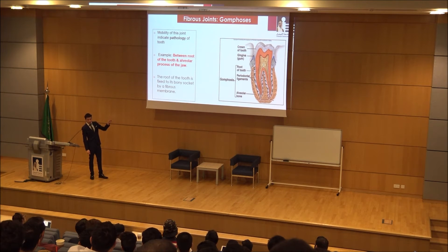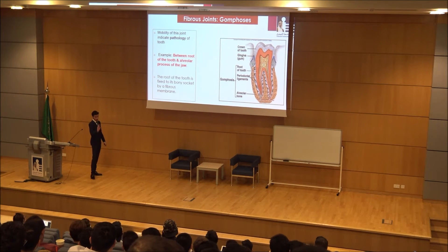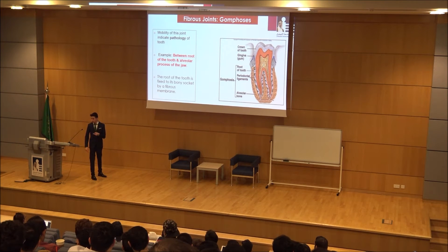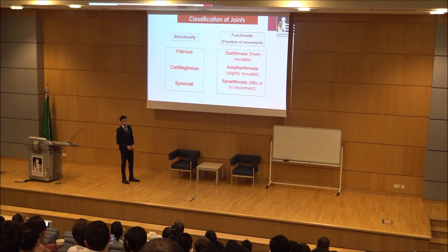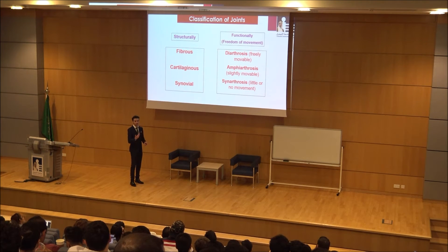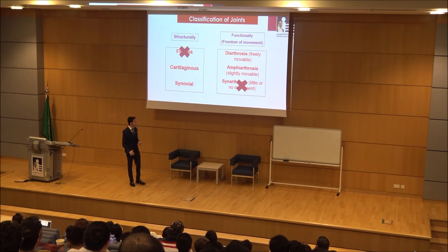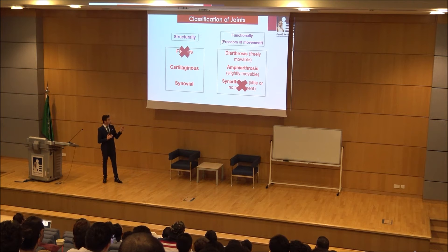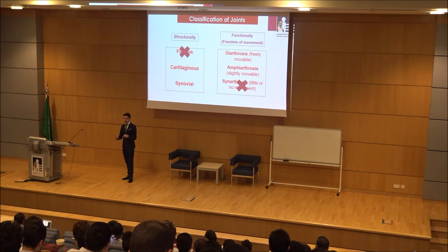Gomphosis is actually the second most mobile fibrous joint. The most mobile fibrous joint is syndesmosis. Now we have finished fibrous joints — classified functionally as synarthrosis, meaning no movement. Any questions about fibrous joints? The femur is in your leg — it's the longest bone in the human body. The second longest is humerus.